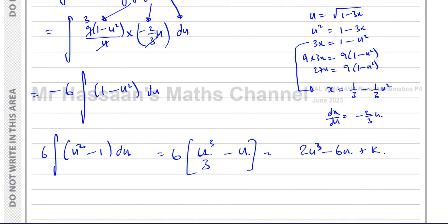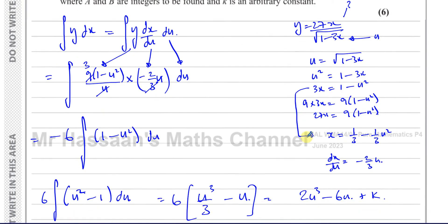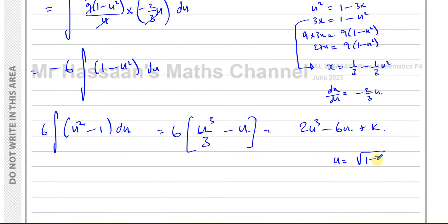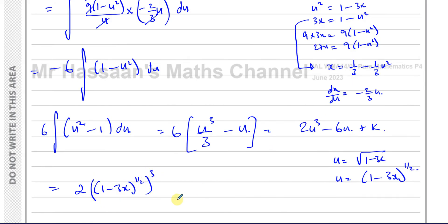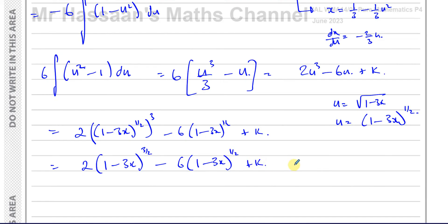Integrating: we get 6 times (u cubed over 3 minus u), which gives 2u cubed minus 6u plus k. Now we back-substitute: u equals the square root of 1 minus 3x, which is (1 minus 3x) to the power of a half. So the result becomes 2 times (1 minus 3x) to the power of a half, cubed, minus 6 times (1 minus 3x) to the power of a half, plus k. Multiplying the powers gives 2(1 minus 3x)^(3/2) minus 6(1 minus 3x)^(1/2) plus k.